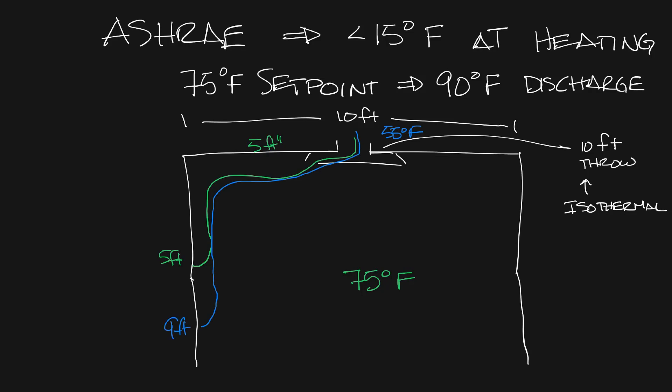Now in heating you have the opposite condition, the throw is going to shorten. So let's go to our 15 degree delta T or 90 degree supply air condition. In this case the throw will go down to about 6.6 feet and so it's going to go down about a foot and a half down the wall.